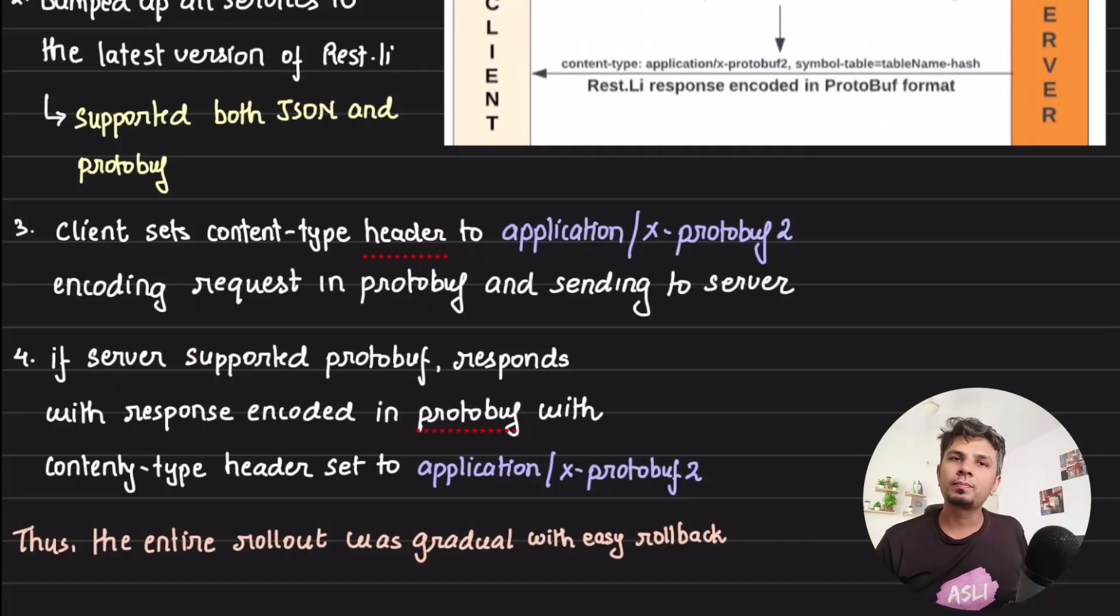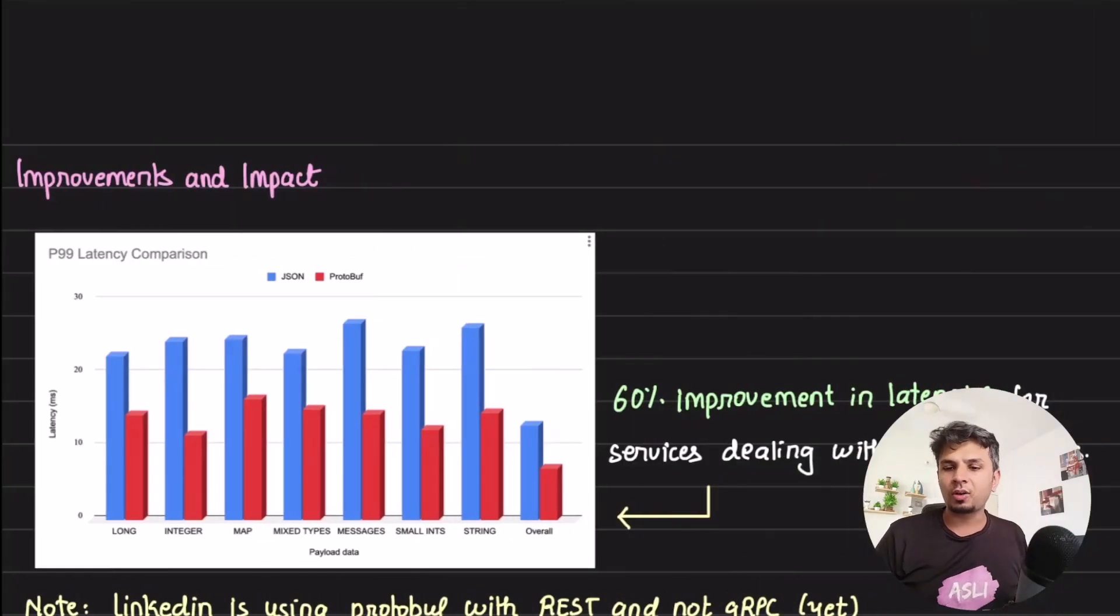This way they gradually released or gradually rolled out this feature to all the services while ensuring that when they were rolling out, fixing any bugs, issues, and they would obviously monitor if they are definitely getting the benefits or not. If everything is good, then they keep rolling out to 100 percent slowly and gradually. This way, without having any hiccups and more importantly having a plan B of rollback - that in case protobuf did not work out for a particular service, let me switch back to JSON - it was going to be very easy. They always had this plan B in mind.